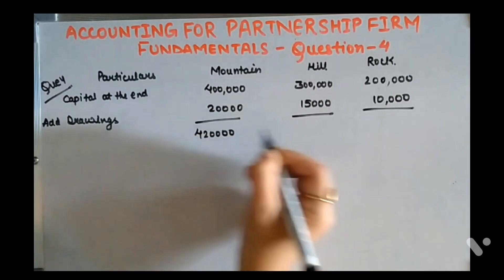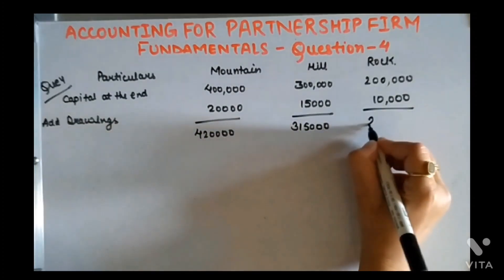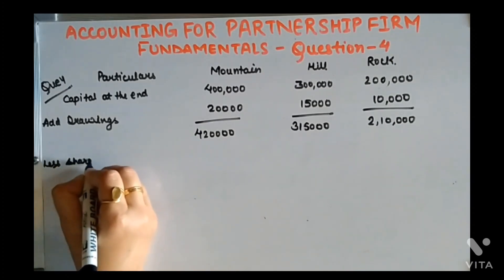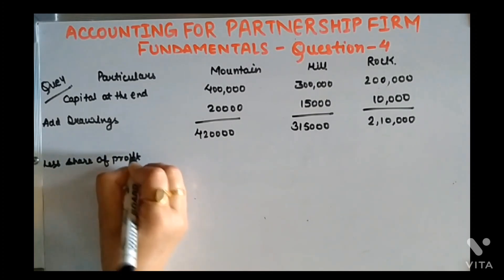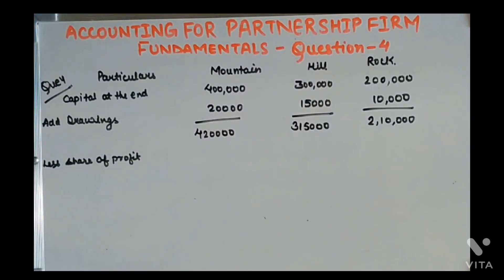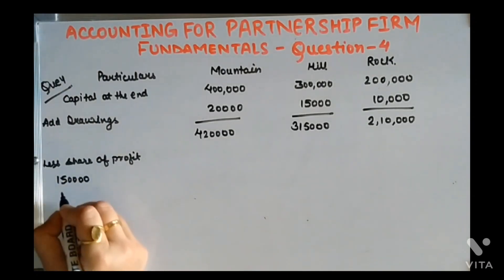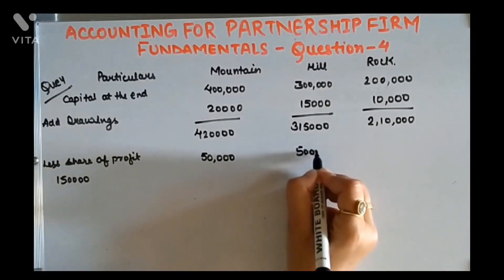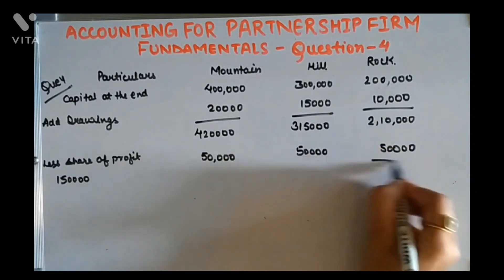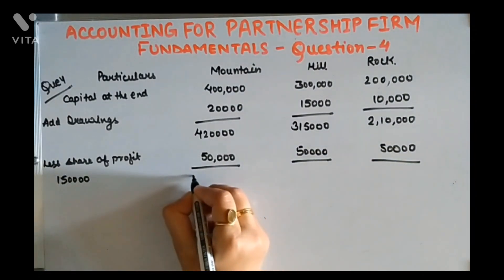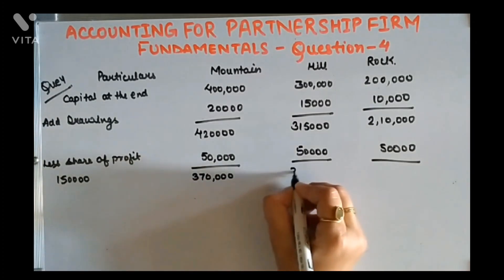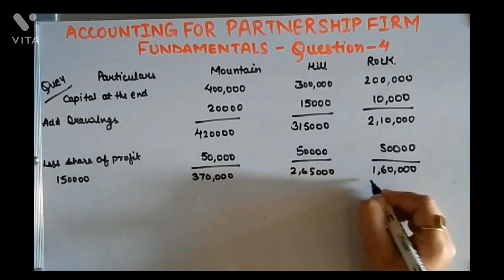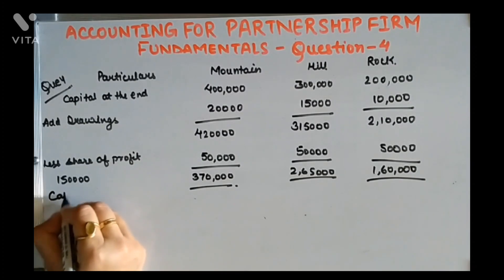After adding drawings, the figures are: Mountain 4,20,000; Hill 3,15,000; Rock 2,10,000. Then we subtract the share of profit. The total profit is 1,50,000, divided equally among three partners — 50,000 each. The beginning capitals are: Mountain 3,70,000; Hill 2,65,000; Rock 1,60,000.